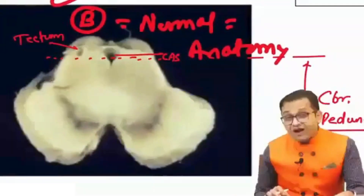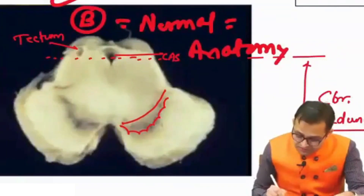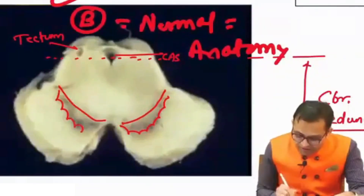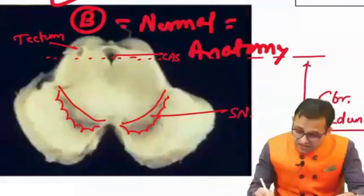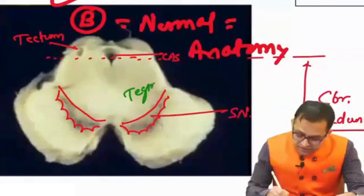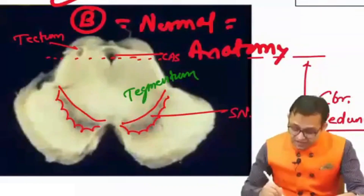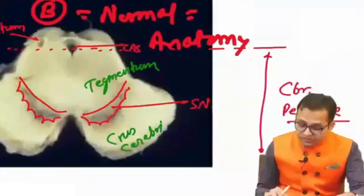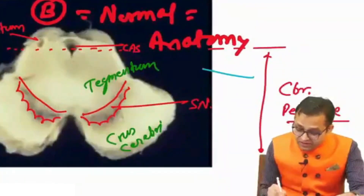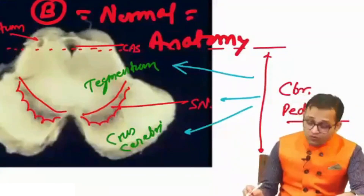This cerebral peduncle is divided into three different parts. This is one substance which is negro in appearance — the substantia nigra. Dorsal to this substantia nigra, you can easily identify the part known as tegmentum. And ventral to this substantia nigra is known as crus cerebri. Remember, the cerebral peduncle has three parts.